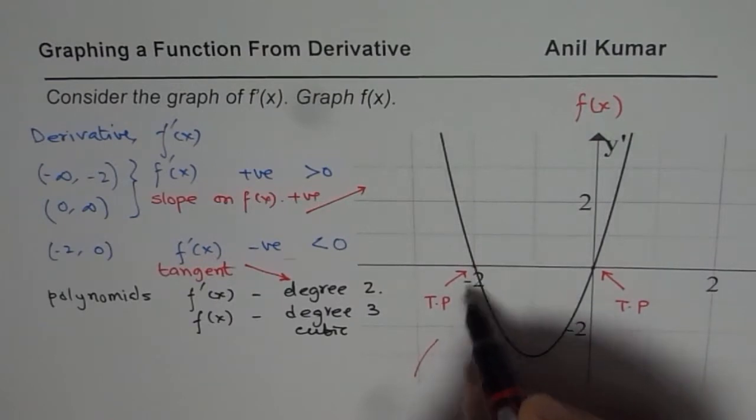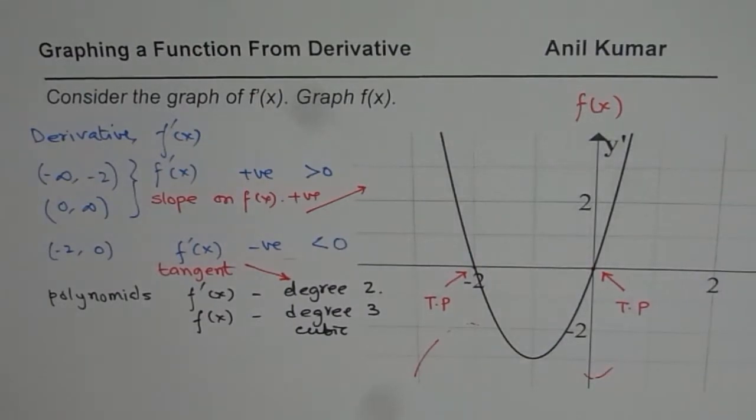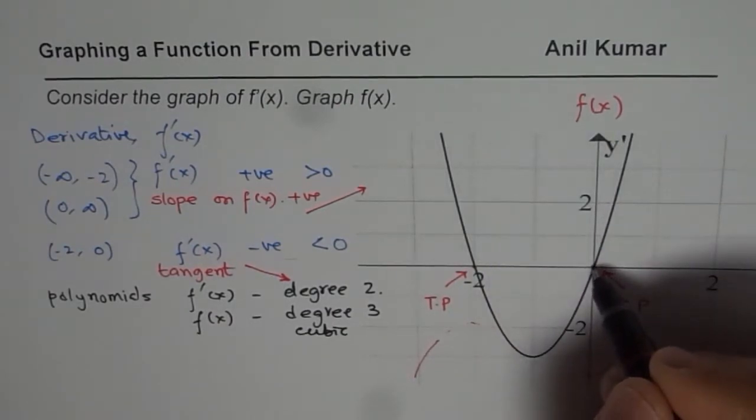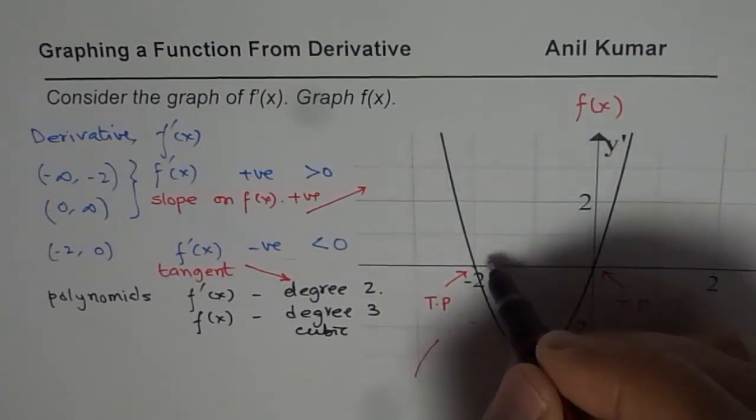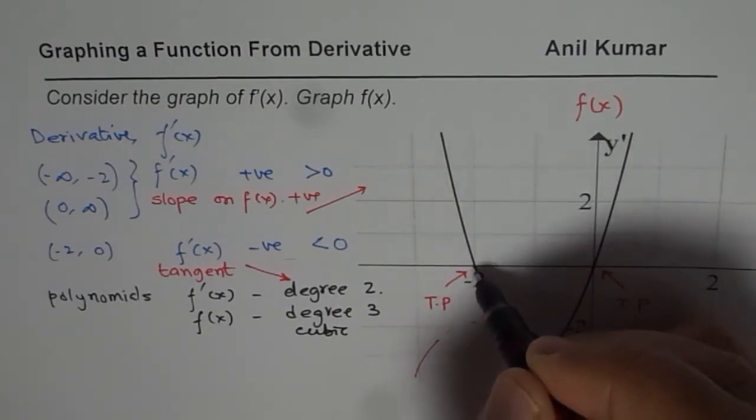So approximately, on a smaller scale, it's going like this, and then becoming negative, means falling, up to 0, and then it goes up. So that is how the graph could be. We know these are the turning points. So it's rising, and that is how it should be done.